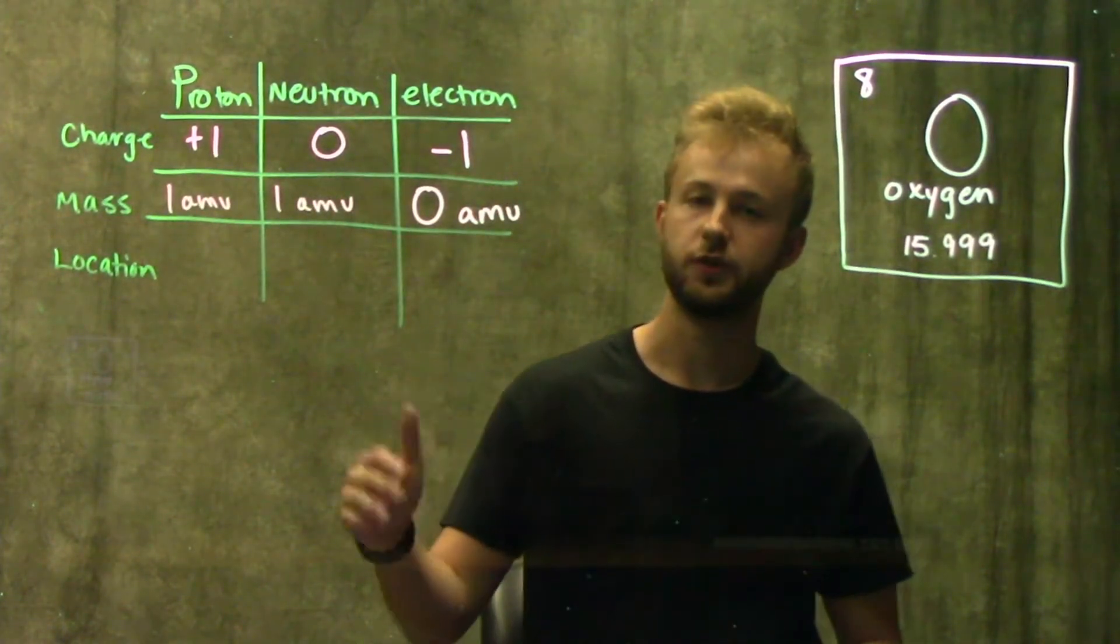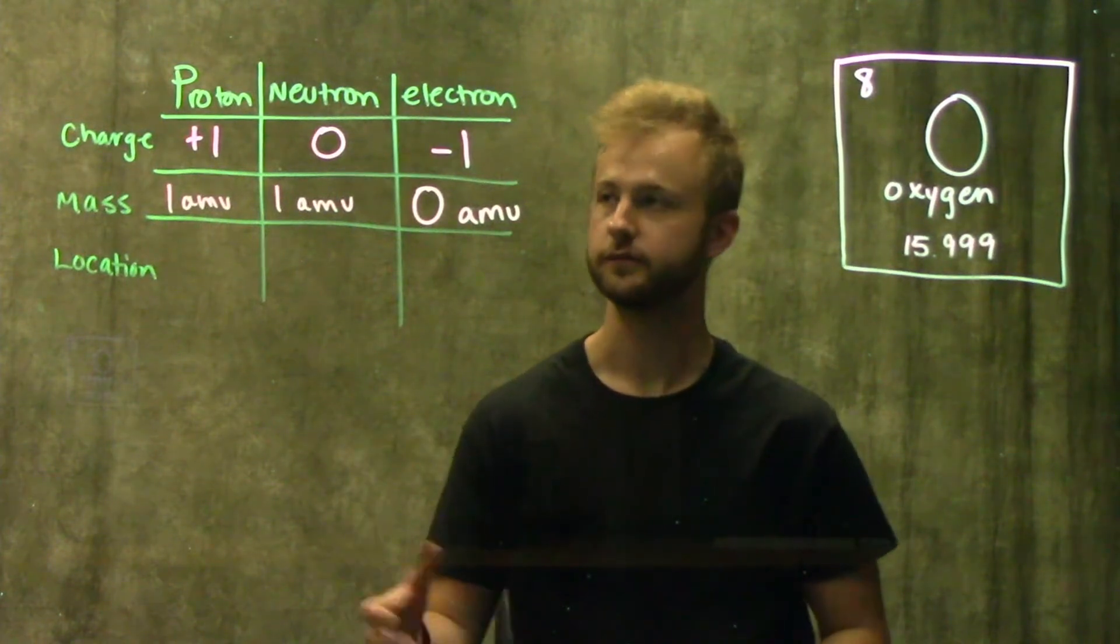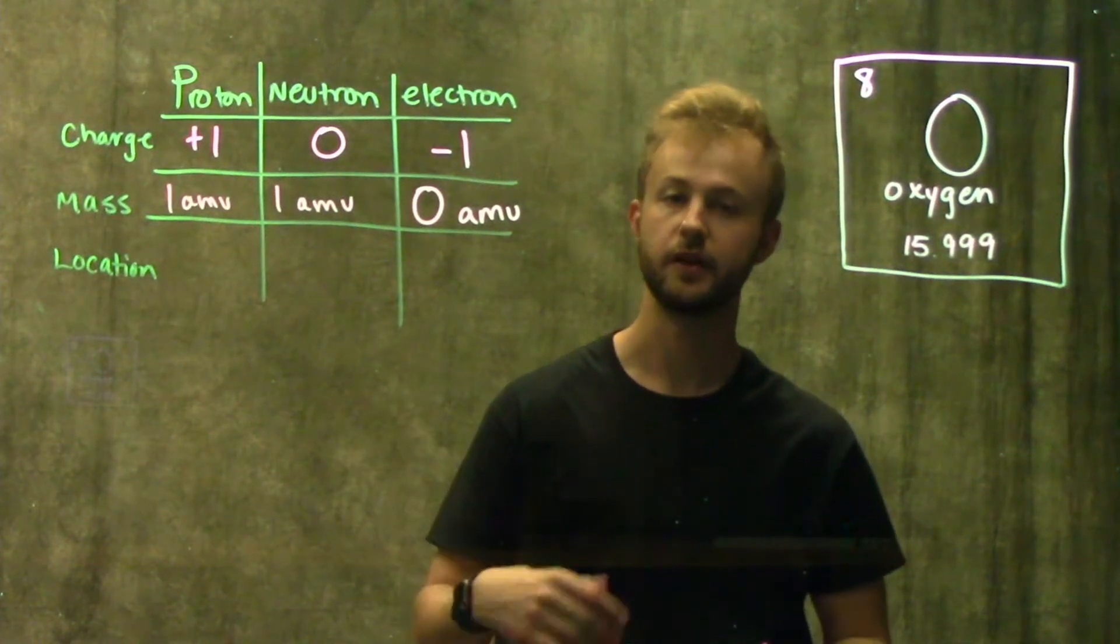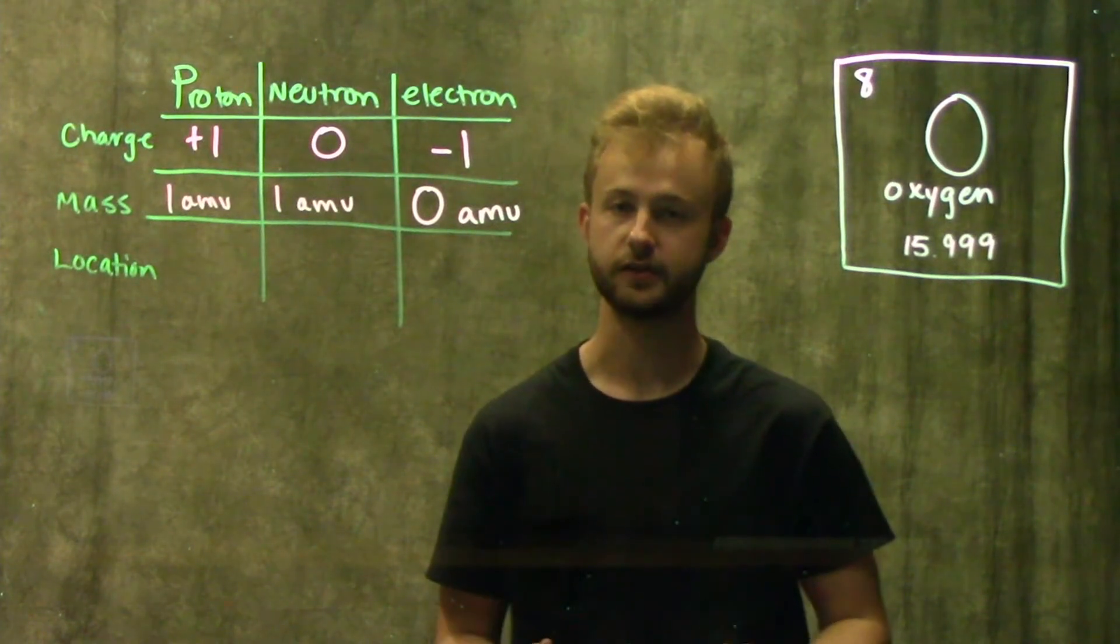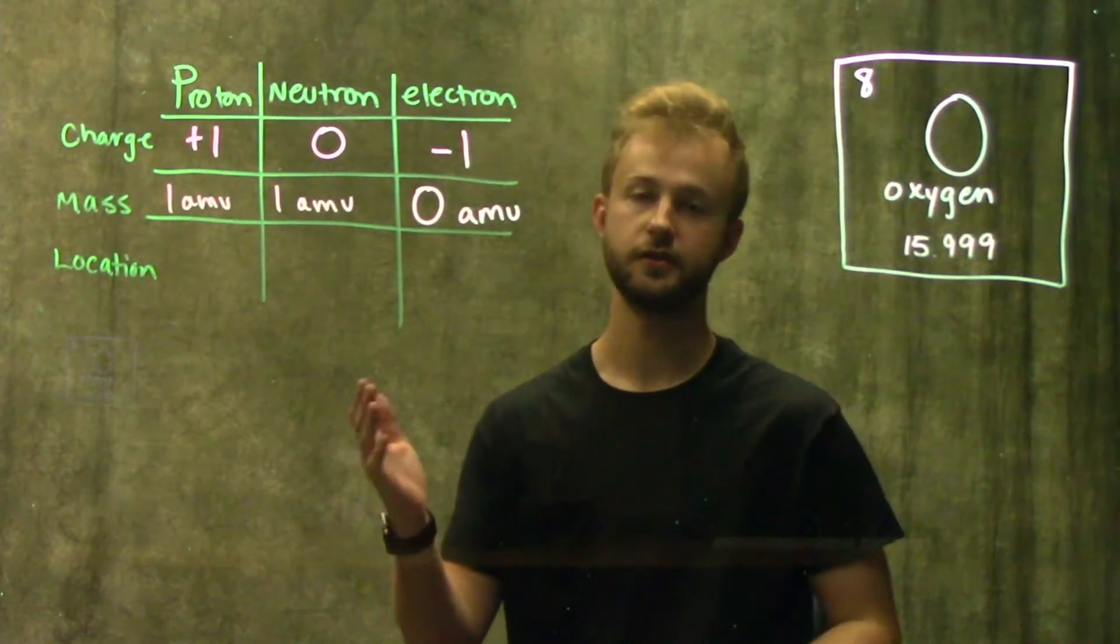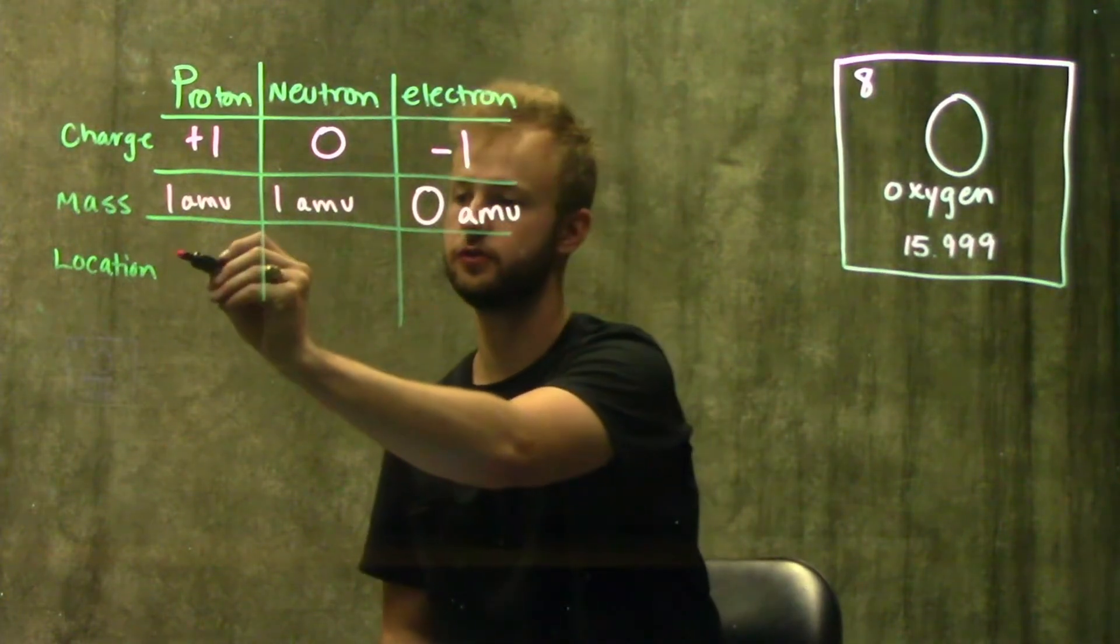So now that we know the mass and the charge, we can move on to where these particles are found. The proton and neutron make up all the mass of an atom. And all the mass of an atom is found in the nucleus of that atom. So that means the proton and the neutron both have to be in the nucleus.